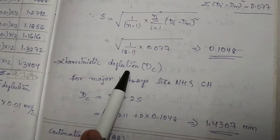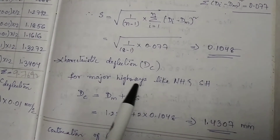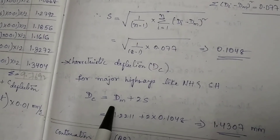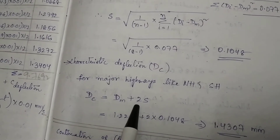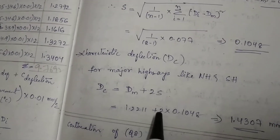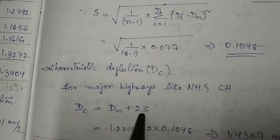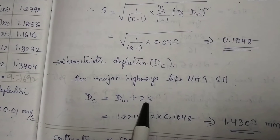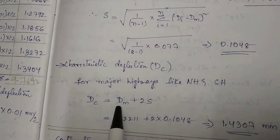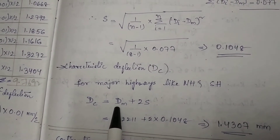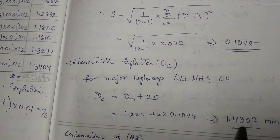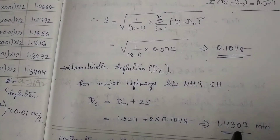The next step is calculation of characteristic deflection Dc. We calculate it using the formula: Dc equals Dm plus 2S, where S is the standard deviation and Dm is the mean deflection value.